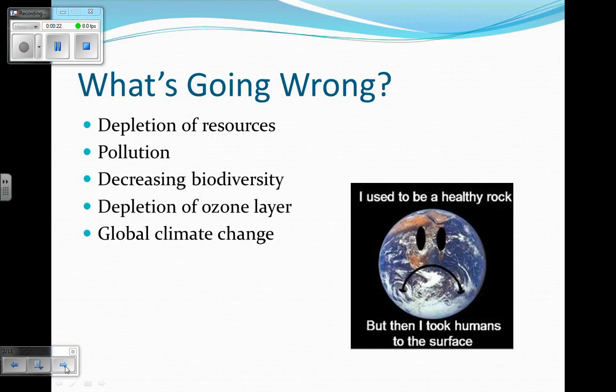So what's going wrong? There are lots of things going wrong. This is just a small list we're going to talk about today. The first is the depletion of resources, resources being anything that humans or other organisms need to survive. There's also pollution, decreasing biodiversity, depletion of the ozone layer, and global climate change.